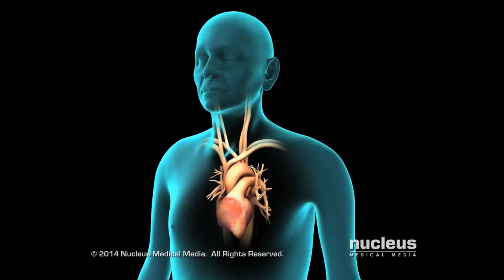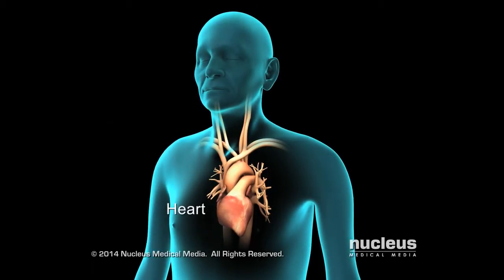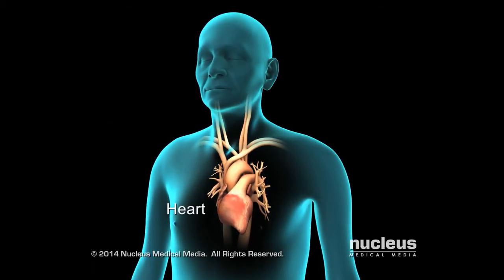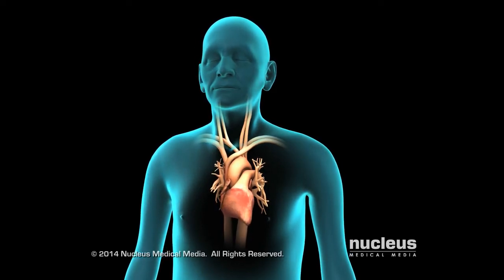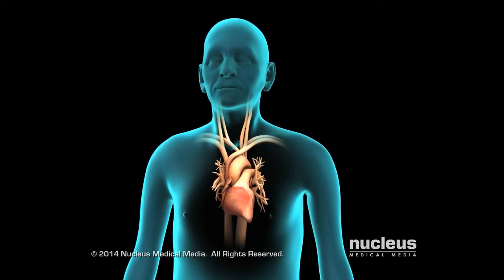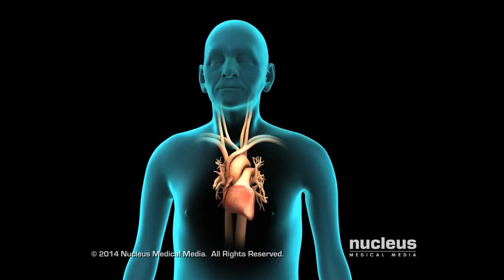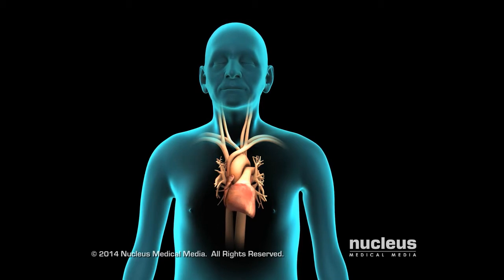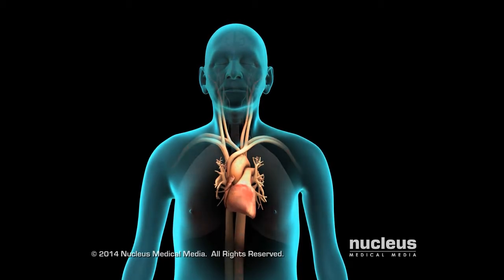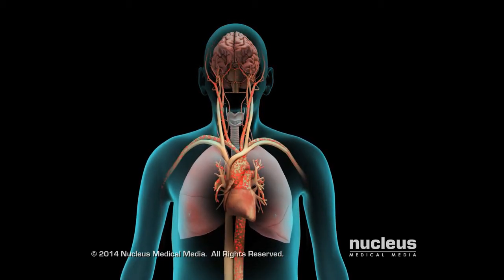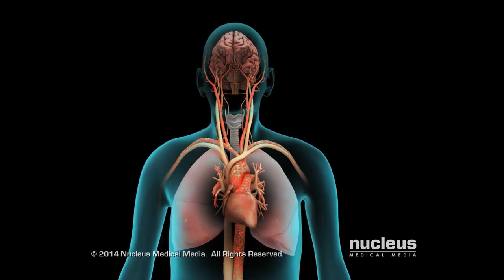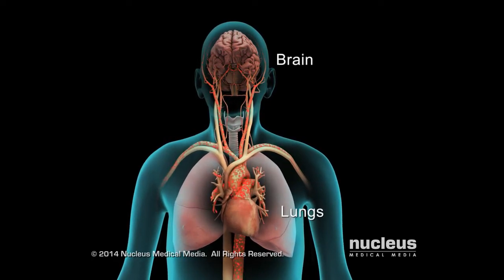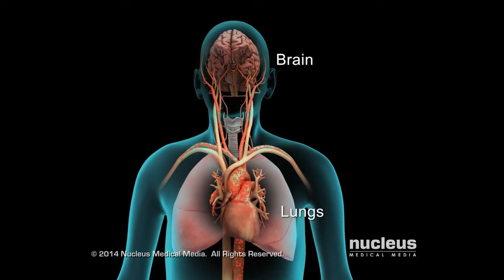Depending on activity level, the heart beats about 60 to 100 times per minute. It may be higher during exercise or lower at rest. A normal heart rate and rhythm ensures the delivery of oxygen-rich blood to all of the body's organs, such as the brain and lungs.